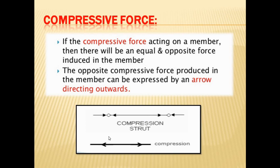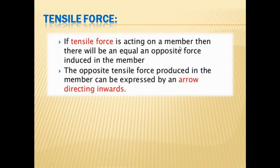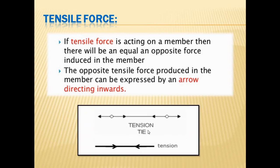If there is a compressive force in the member, the internal forces are towards the joint. The opposite compressive force produced in the member can be expressed by an arrow directing outwards. Now for tensile force: if a tensile force acts on a member, there will be an equal and opposite force induced. The opposite tensile force can be expressed by an arrow directing inwards — meaning the internal forces will be away from the joint. This will be helpful while solving problems.